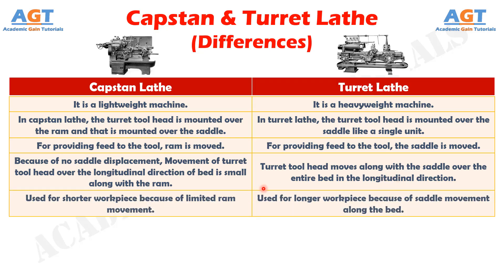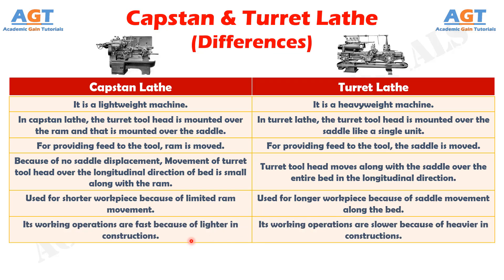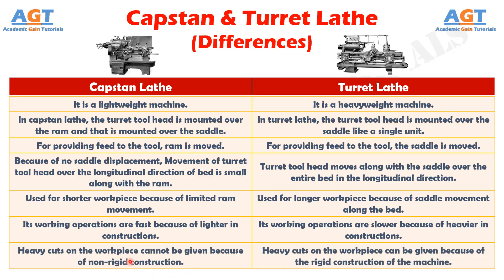The capstan lathe is used for shorter workpieces because of limited ram movement, whereas turret lathe is used for longer workpieces because of saddle movement along the bed. The working operations of capstan lathe are fast because of lighter construction, whereas working operations of turret lathe are slower because of heavier construction. In capstan lathe, heavy cuts on the workpiece cannot be given because of non-rigid construction, whereas in turret lathe, heavy cuts can be given because of the rigid construction of the machine.